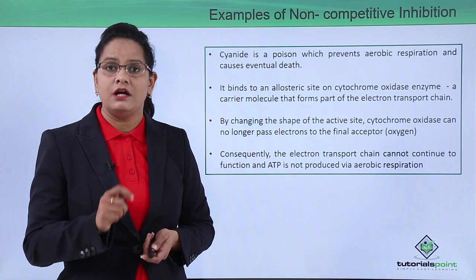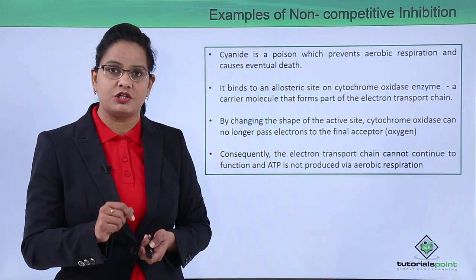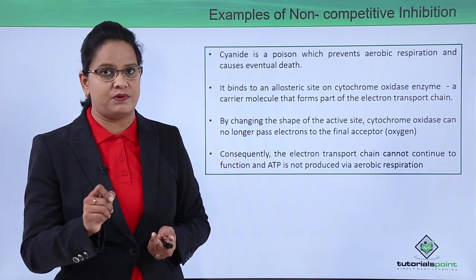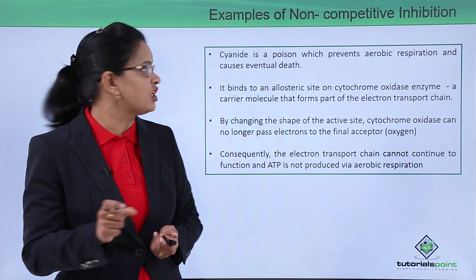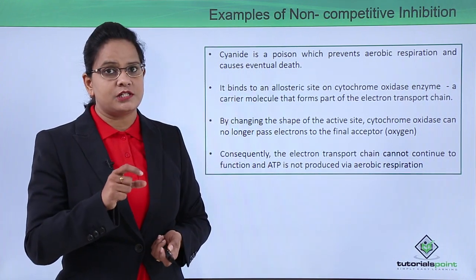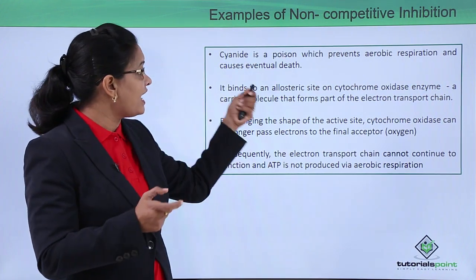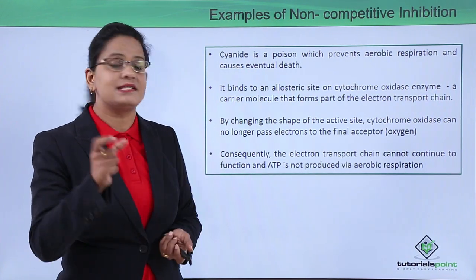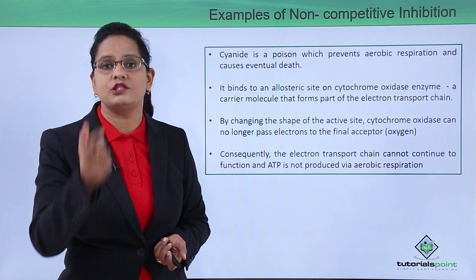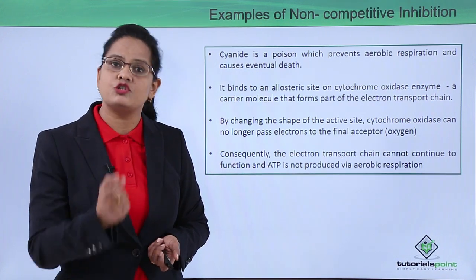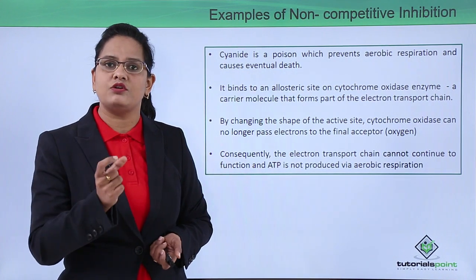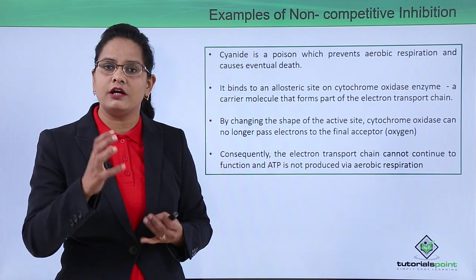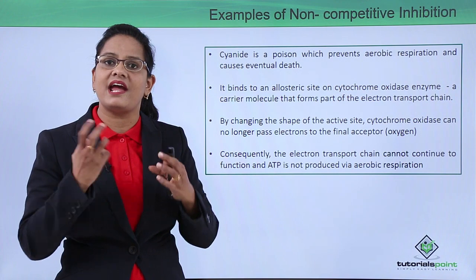A common example of non-competitive inhibition is cyanide poisoning. Cyanide prevents aerobic respiration by blocking the electron transport chain, which eventually leads to death. It binds to the allosteric site of the cytochrome oxidase enzyme. Cytochrome oxidase is a carrier molecule that carries oxygen in the electron transport chain. Cyanide binding to its allosteric site stops its functioning, so oxygen transfer cannot occur, the electron transport chain is disabled, and death follows.